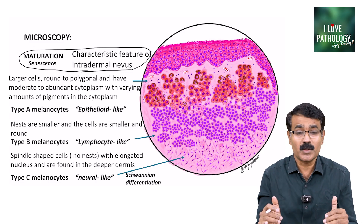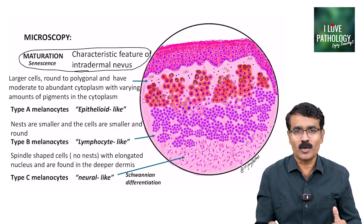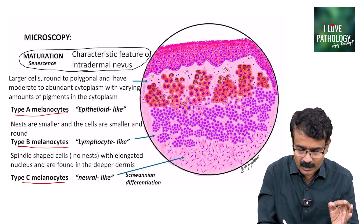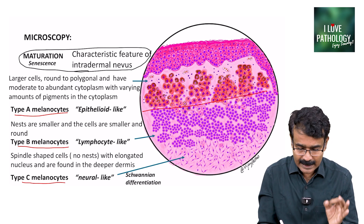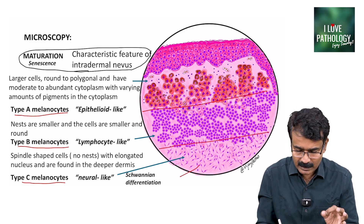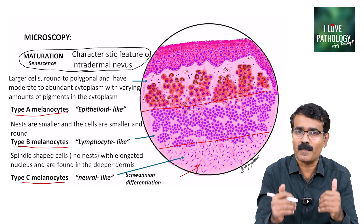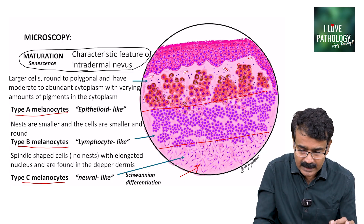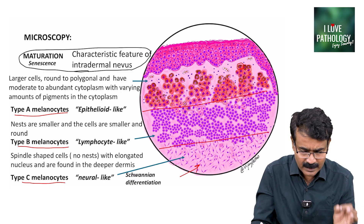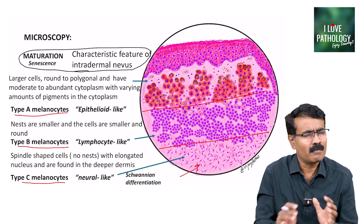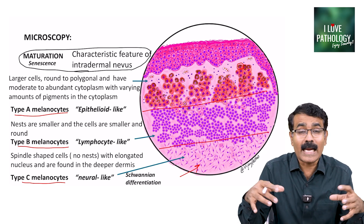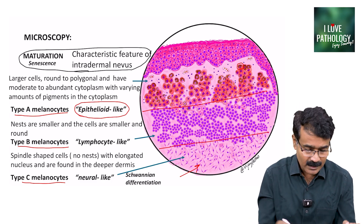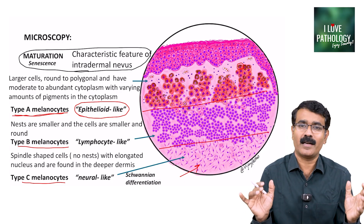Maturation senescence means you have different types of melanocytes categorized as type A, type B, and type C melanocytes. Type A melanocytes are the most superficial, type B are in the middle, and type C are in the deeper part — the most mature melanocytes. Type A melanocytes are large, round to polygonal in shape, with moderate to abundant amounts of cytoplasm containing large amounts of pigment. They look like epithelial cells and are referred to as epithelial-like melanocytes.